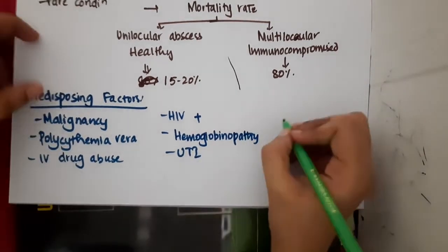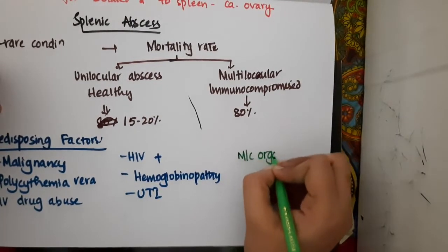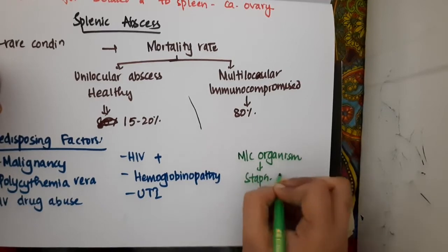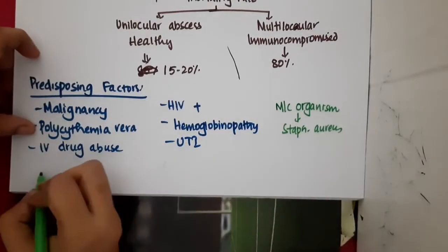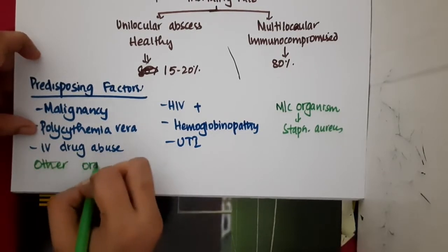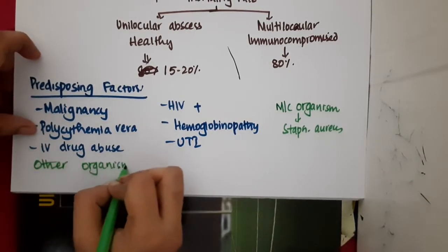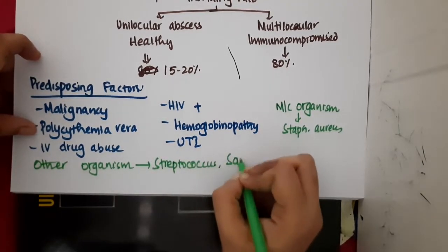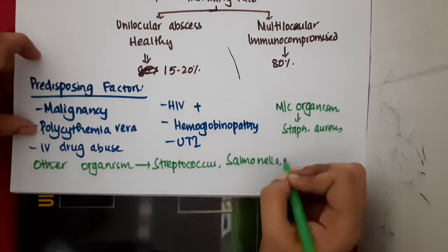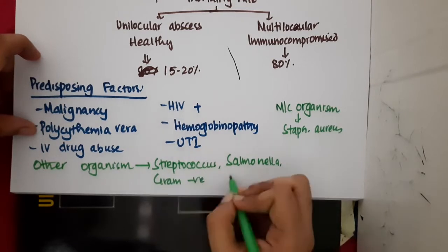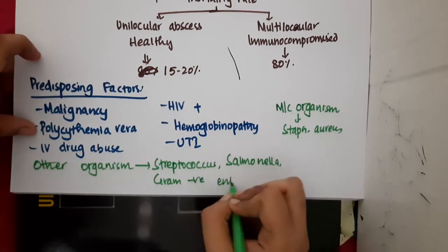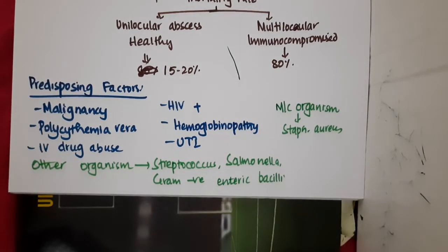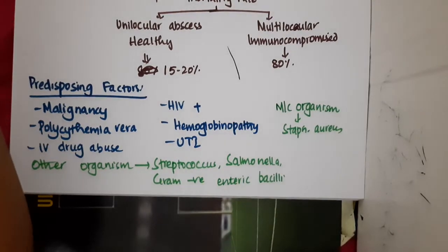The most common organism involved in splenic abscess is Staphylococcus aureus. Other organisms responsible include Streptococcus, Salmonella, and gram-negative enteric bacillus.